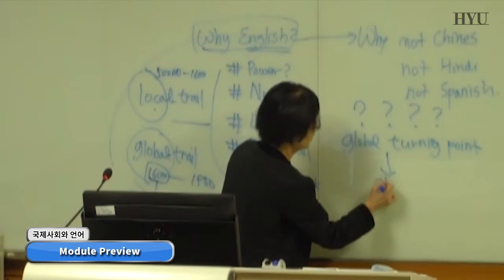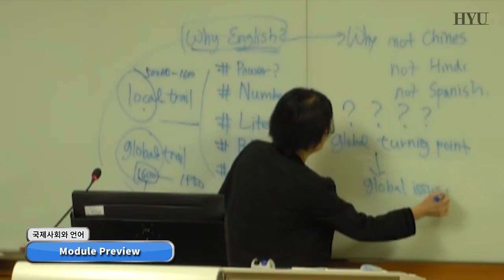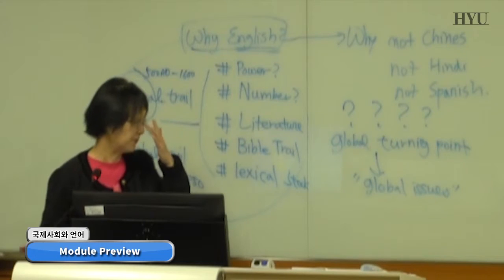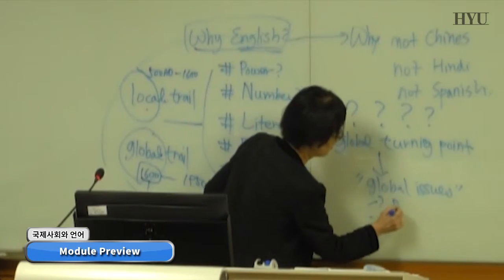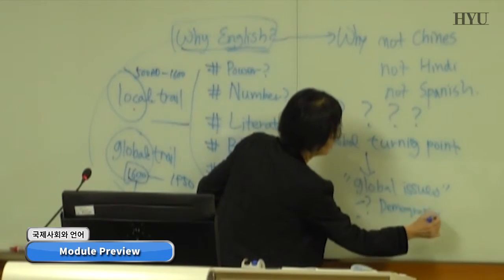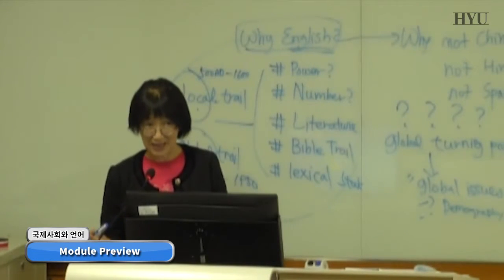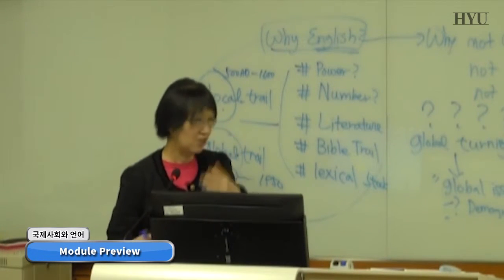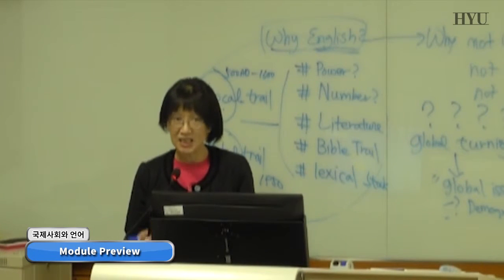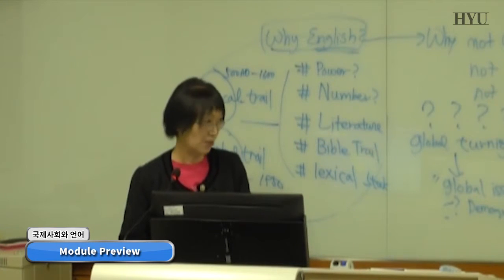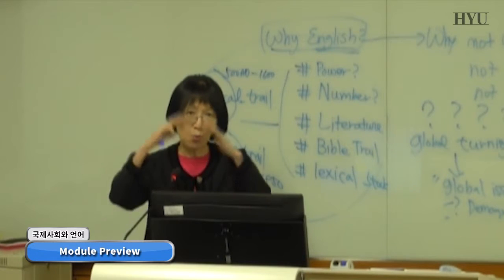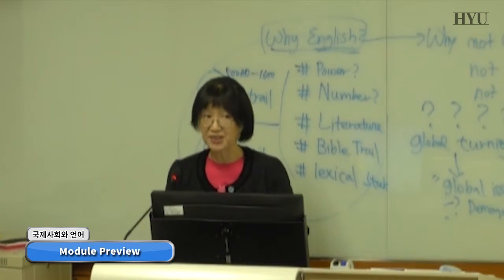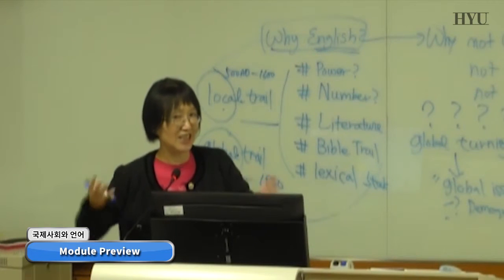We will then move on to global issues that can change the linguistic picture. In this regard, we will be talking about demography. Demography is something dynamic — it is the statistical study of population trends, covering aging, fertility rate, immigration, and urbanization. These demographic changes are occurring in global society and could be one of the global issues that can change the position of English.